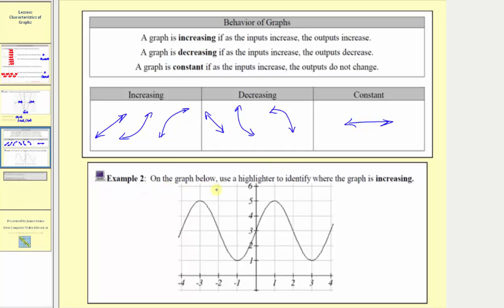For our last example, on the graph below we're asked to use a highlighter to identify where the graph is increasing — the part going uphill from left to right. Starting on the left, this piece of the graph is going uphill, so the graph is increasing over this interval; as the inputs increase, the outputs increase. Then from the input value of negative three to negative one, the graph is going downhill, so it's decreasing over that interval. We only want to highlight the increasing parts. From negative one to positive one, the graph is going uphill again, so it's increasing over this interval.